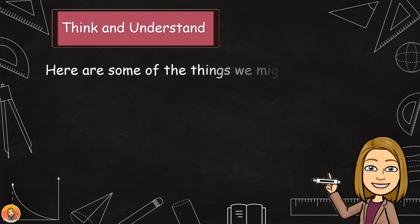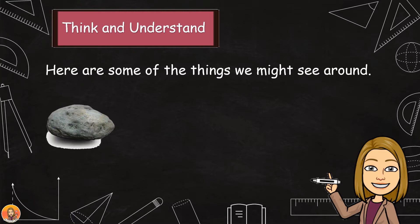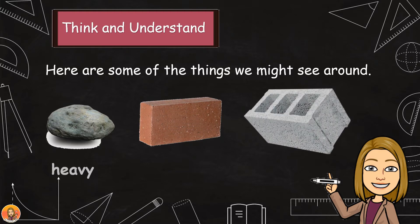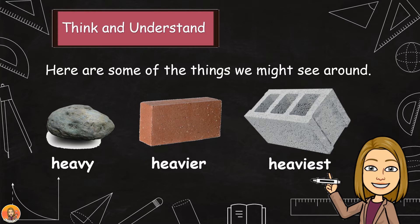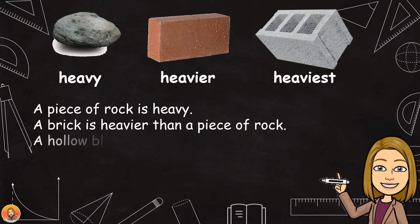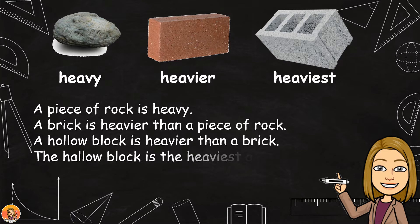Here are some of the things we might see around. A piece of rock is heavy. A brick is heavier than a piece of rock. A hollow block is heavier than a brick. The hollow block is the heaviest among the three.